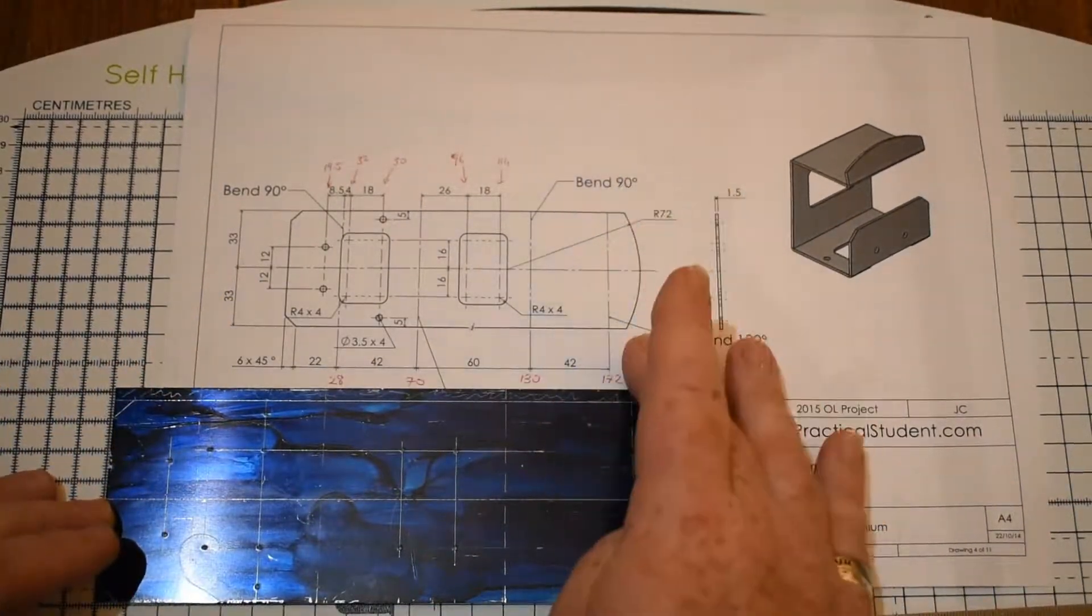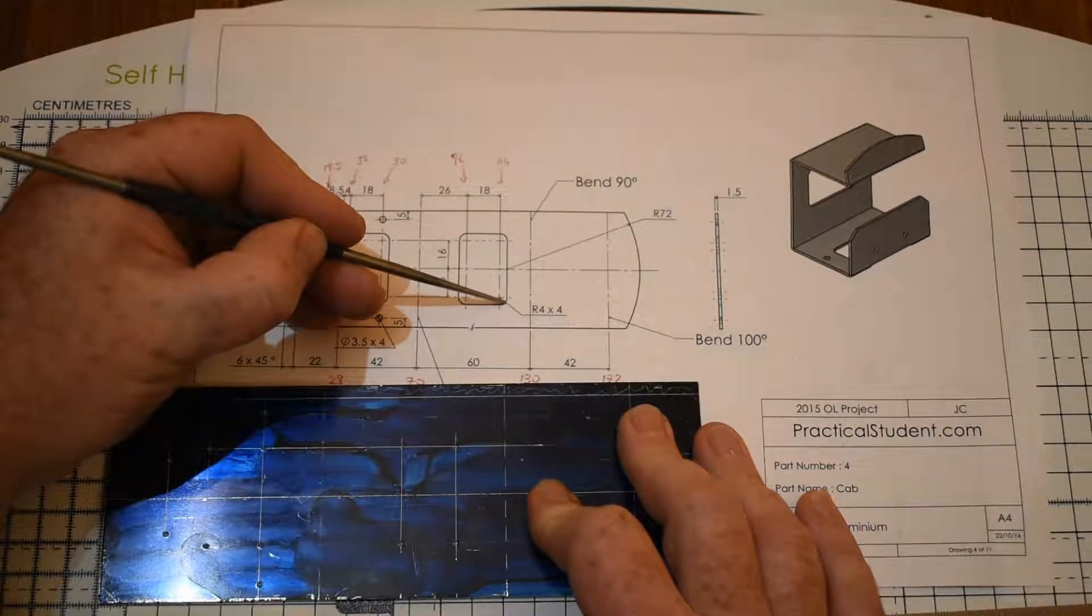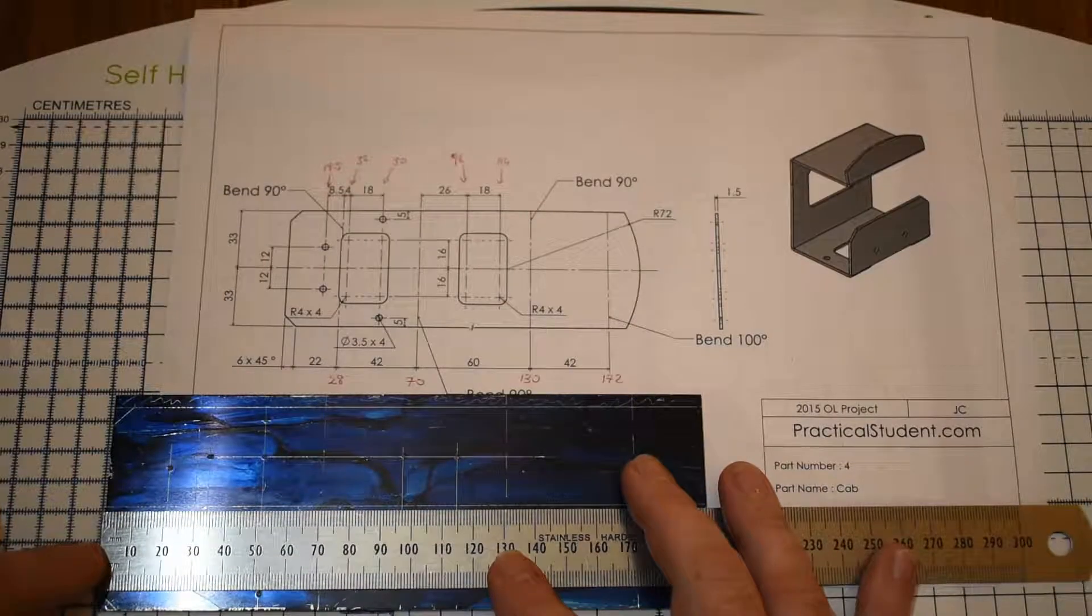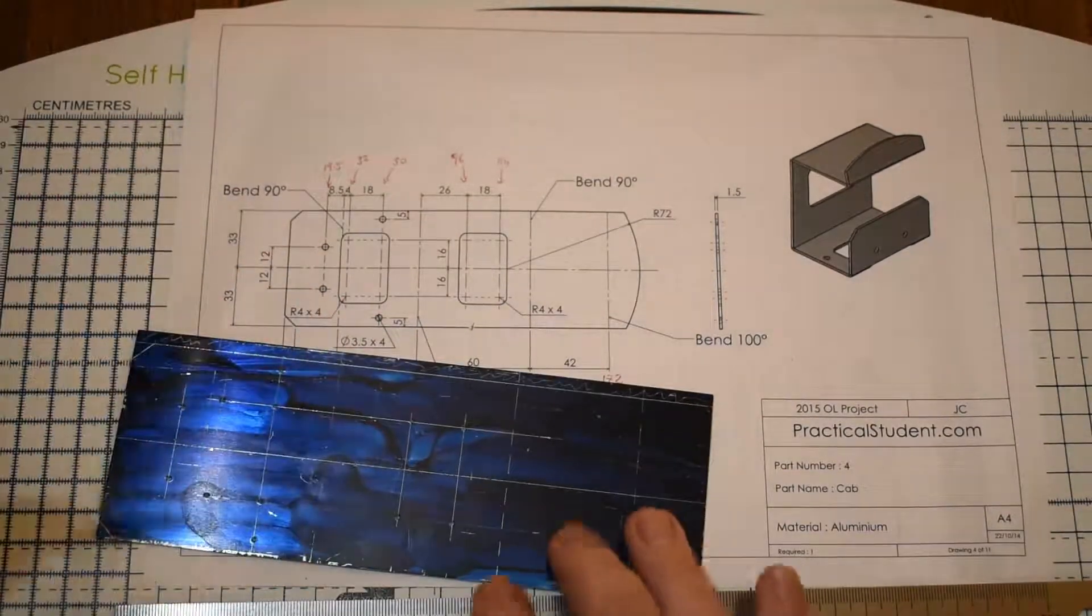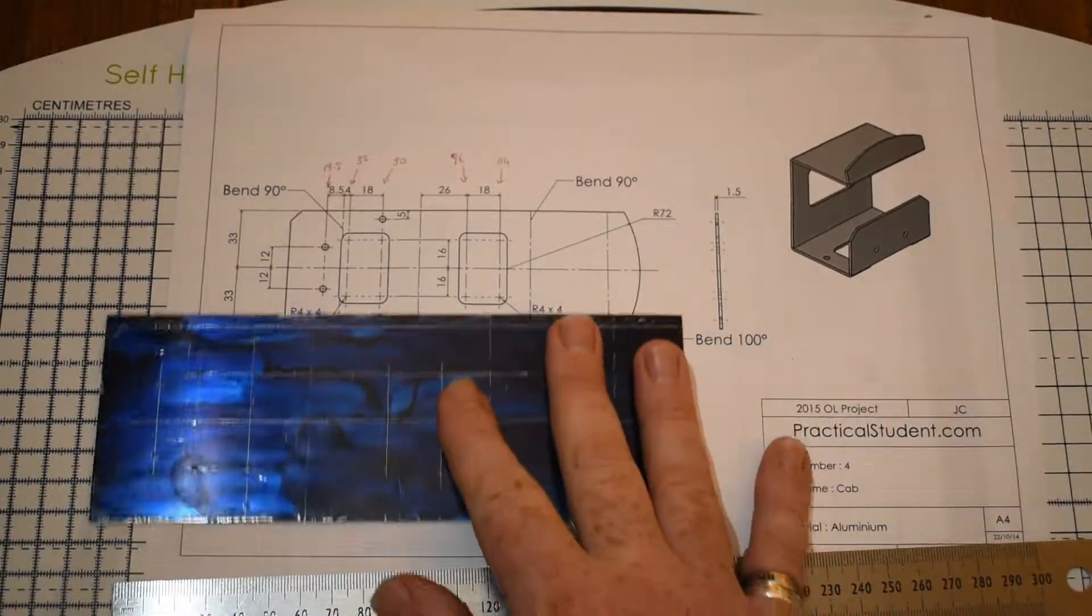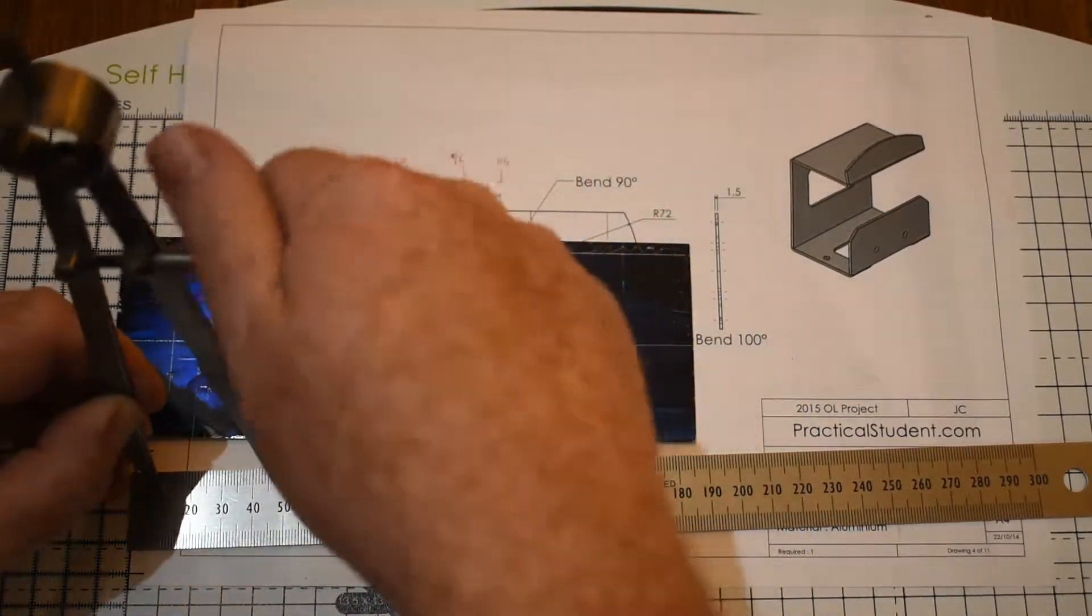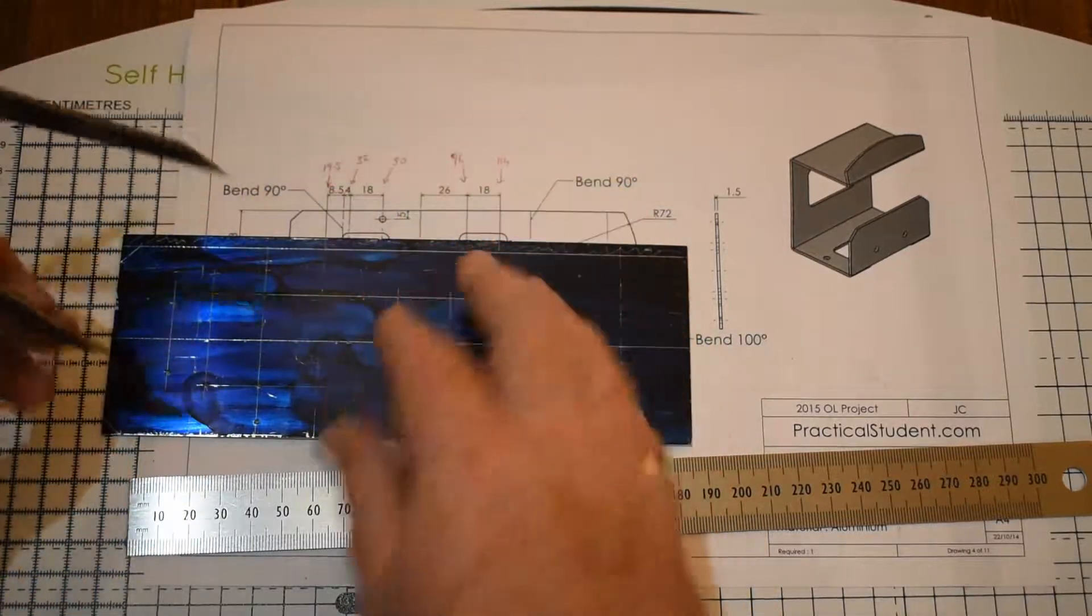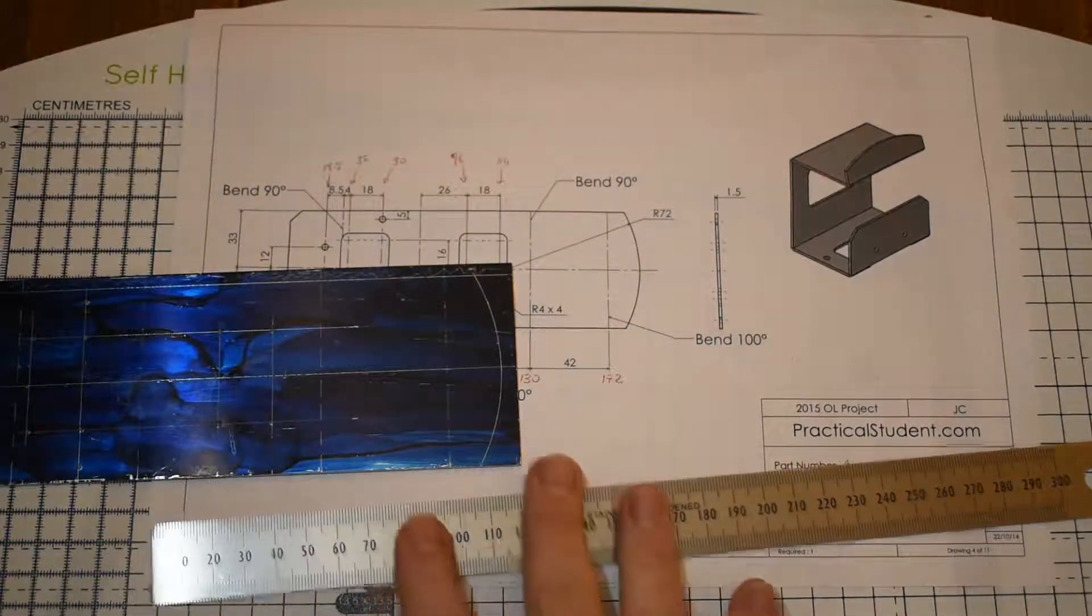And we have one last bit to do. We have this curve at the end to do. We're told it's radius 72 from here. Now we don't have that point yet. But because these are radius 4, that means the distance here is 4. So that distance is 4. So I'm going to measure 114 plus 4, which is 118 from the end. I'm going to punch that point. And I'm going to set 72 on my dividers. So I want to start at 10, 10 plus 72 is 82. And from here we draw the curve. And that's it. Our part is marked out.